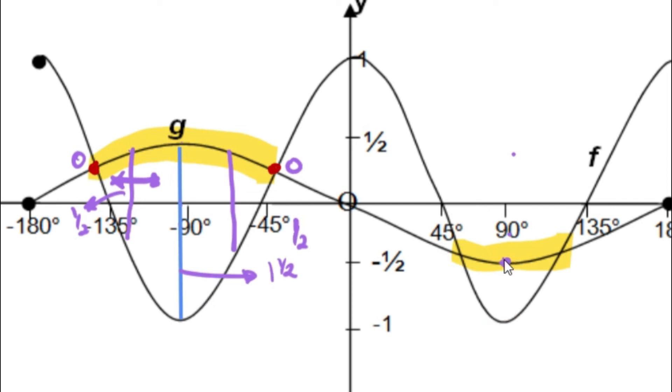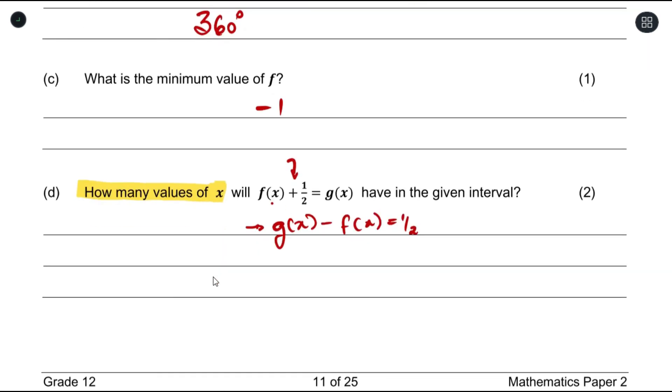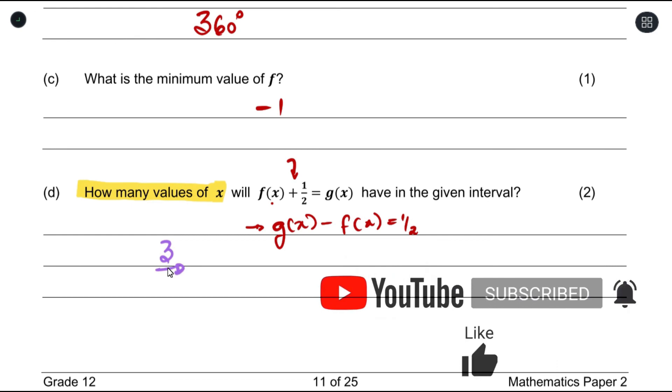On this side here we can see the lowest point is negative half and the lowest point here is negative one. So the difference between this would be half unit. So this is also another x value that has the difference of half. So we have three in total. So the answer we need to give is just how many values of x with f(x) plus half equals to g(x) have in this given interval. We'll say that we just have three of them. That's it.